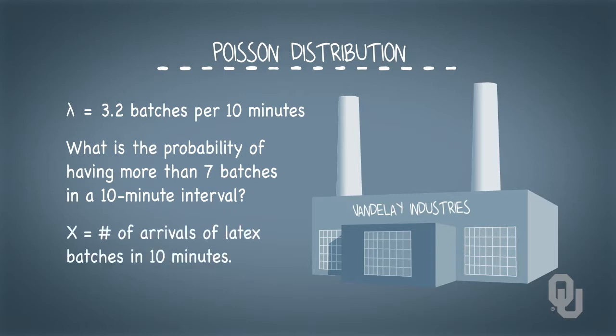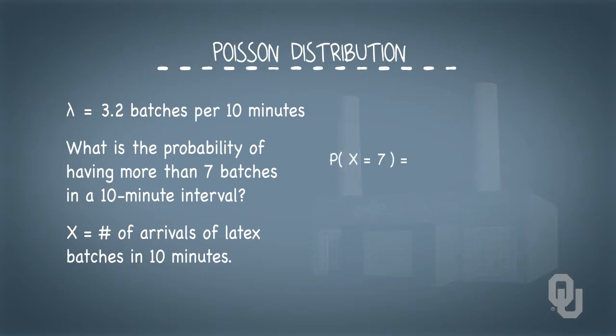Let's define random variable x to be the arrivals of latex stock batches in 10 minutes. The rate of arrival lambda is 3.2 batches per 10 minutes. Note that the interval in the rate has to match the interval in the random variable. The probability that x equals 7 is 3.2 to the 7 times e to the negative 3.2 divided by 7 factorial. This probability is 0.0278.